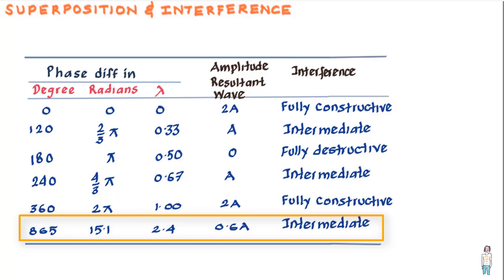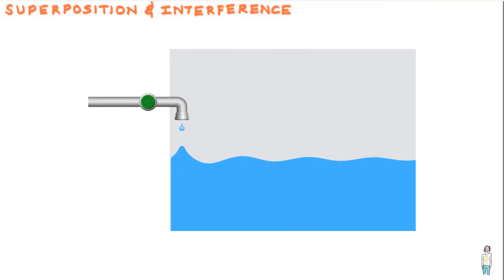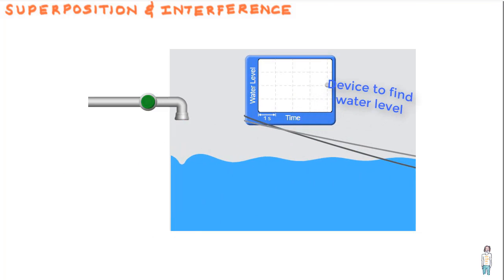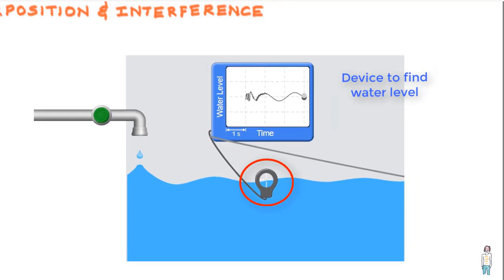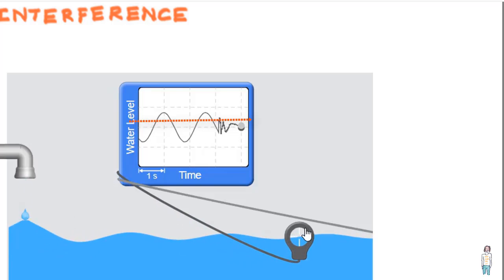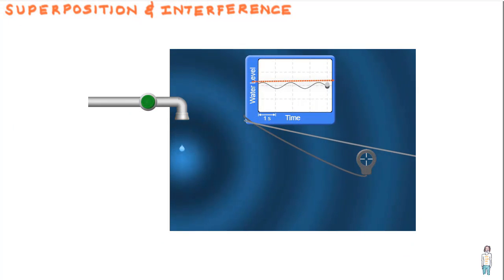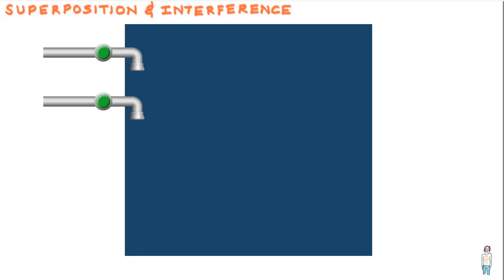Let us simulate an experiment to give a better understanding of the principle of superposition and interference. Suppose you have a water tank and a pipe from which water can drip in. We open a tap so water starts dripping. An attached probe helps us find the water level. Placing the probe close to the source gives larger waves; moving it away gives smaller waves. From the top view the pattern is visible. We start again with two taps, noting the water level before opening them — a flat reference line, the zero mark.